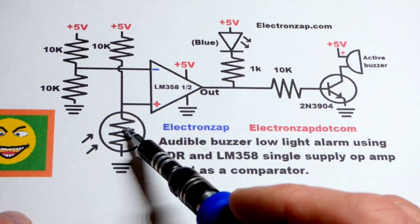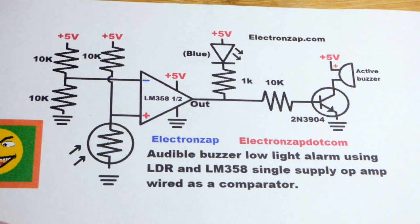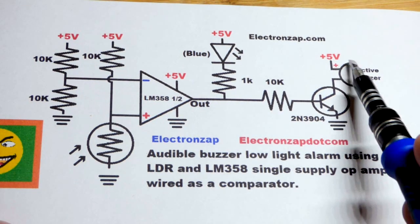So ultimately what we have here is a circuit where if it gets dark enough, the buzzer goes into alarm basically. Turns on and buzzes.